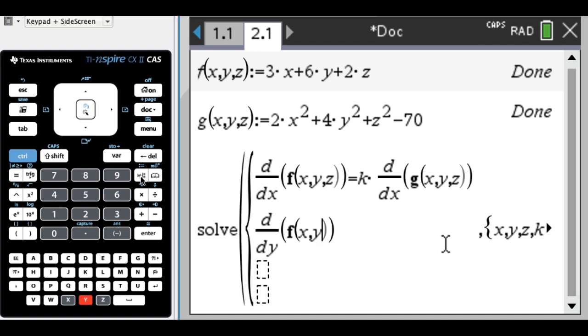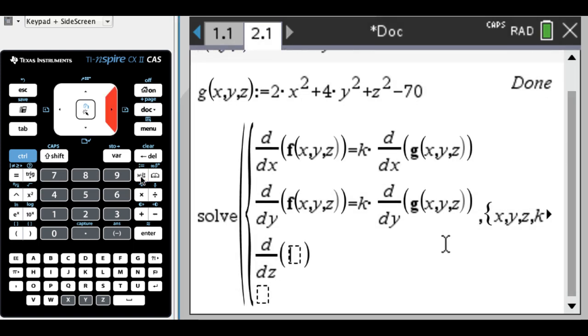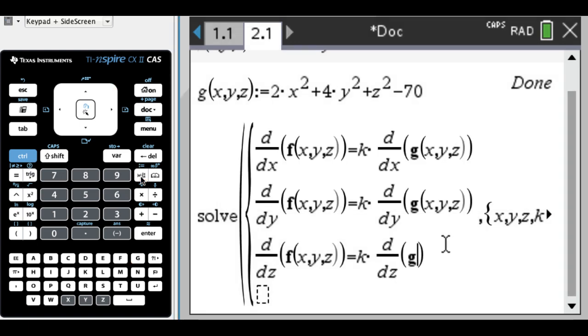Partial y, f of x, y, z. But then again, I can type and you can't, so I don't know. This is one instance where I'd rather be you, I think. And now we need to add in partial z because there's that third partial derivative, x, y, z equals k times partial z, g of x, y, z, and then finally we also need g of x, y, z equals zero.